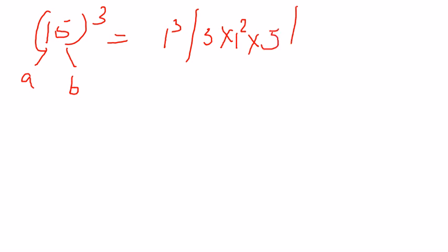Write it this way: 3 cross 1 square cross 5. Now 3b square a, 3 a b square, so 3 cross 1 cross 5 square. And finally b cube, 5 cube.